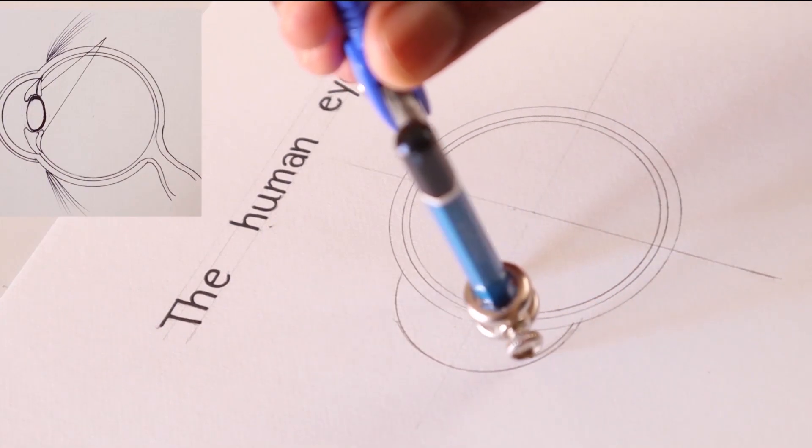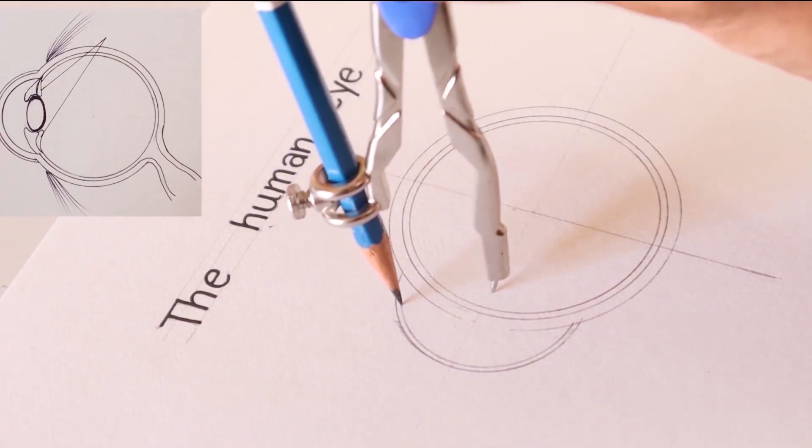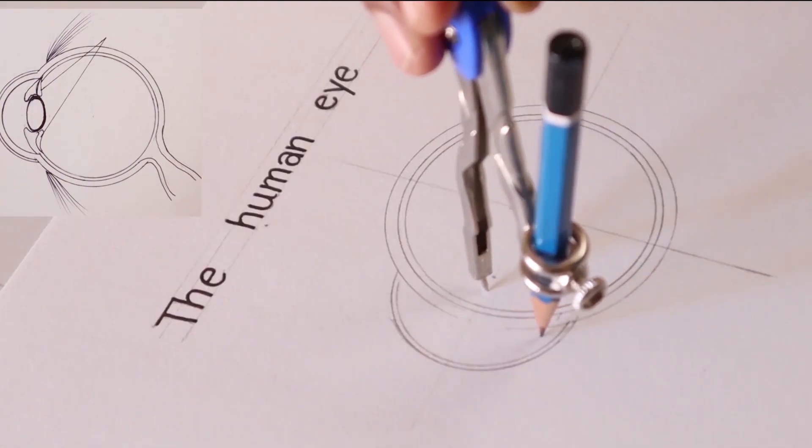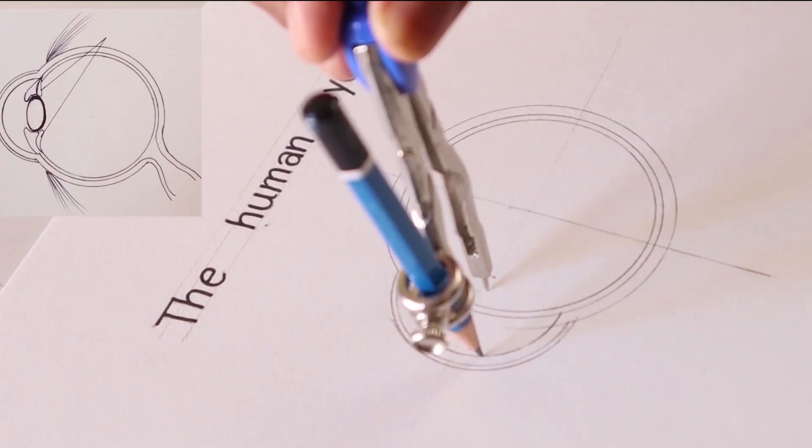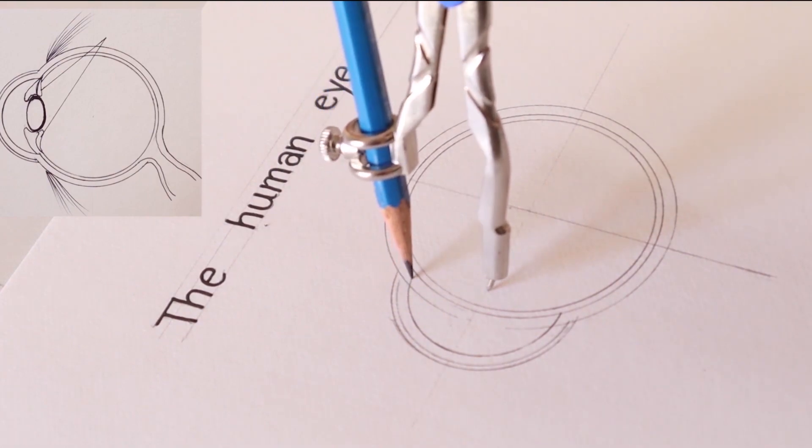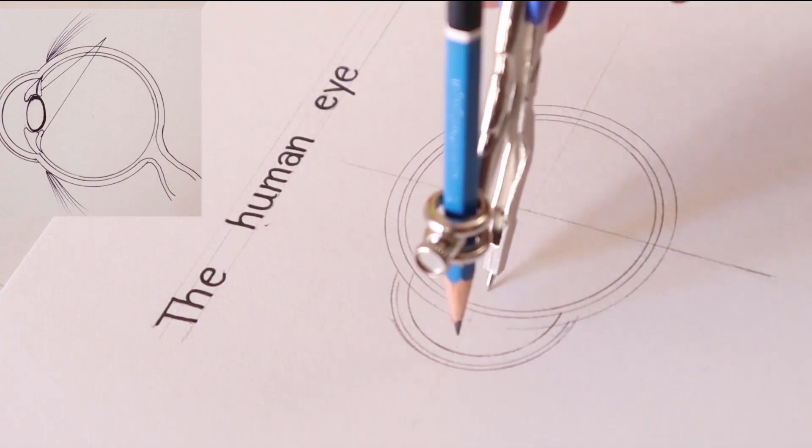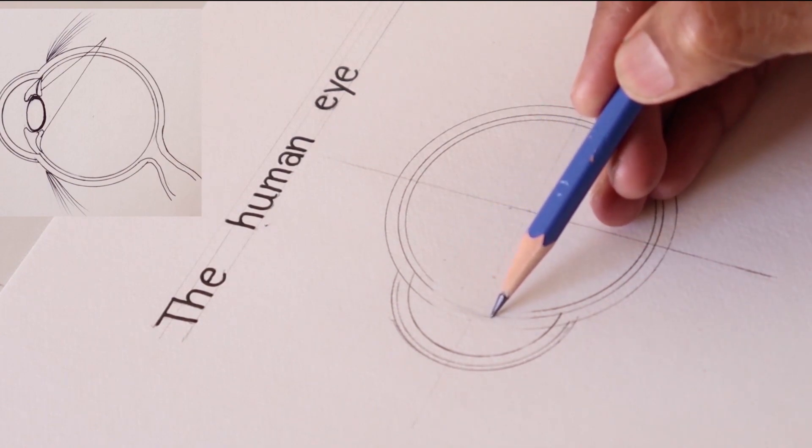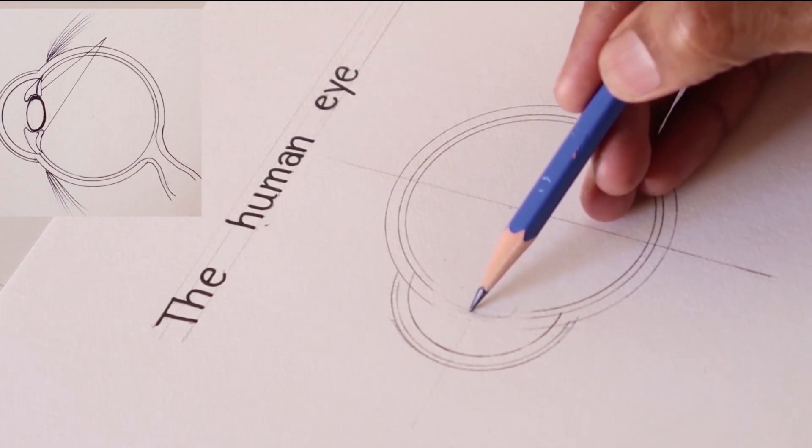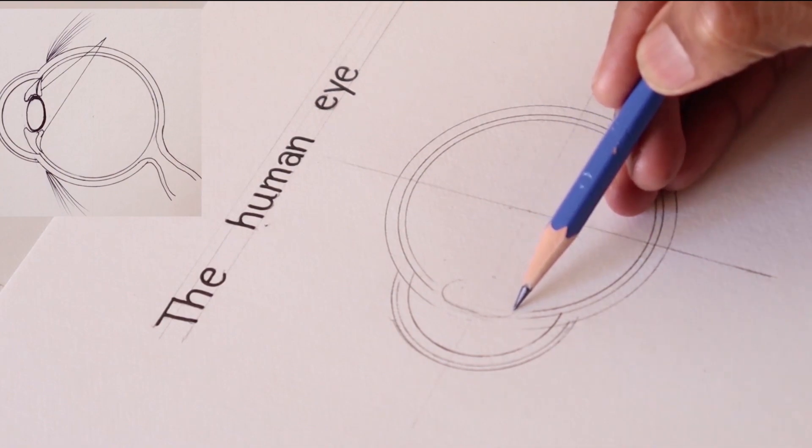Now we are drawing the cornea of the eye. So draw three curves and erase the remaining part.